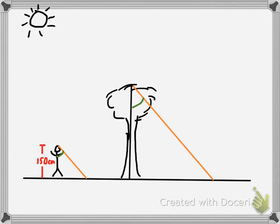We say they're right triangles because we assume the person is standing vertically and the tree is standing vertically. The triangles kind of look similar to one another, and in fact they are. What we'll be learning today is that if you can ever prove that two triangles have two pairs of congruent angles — such as these two angles and these two angles — it automatically means the triangles are similar.